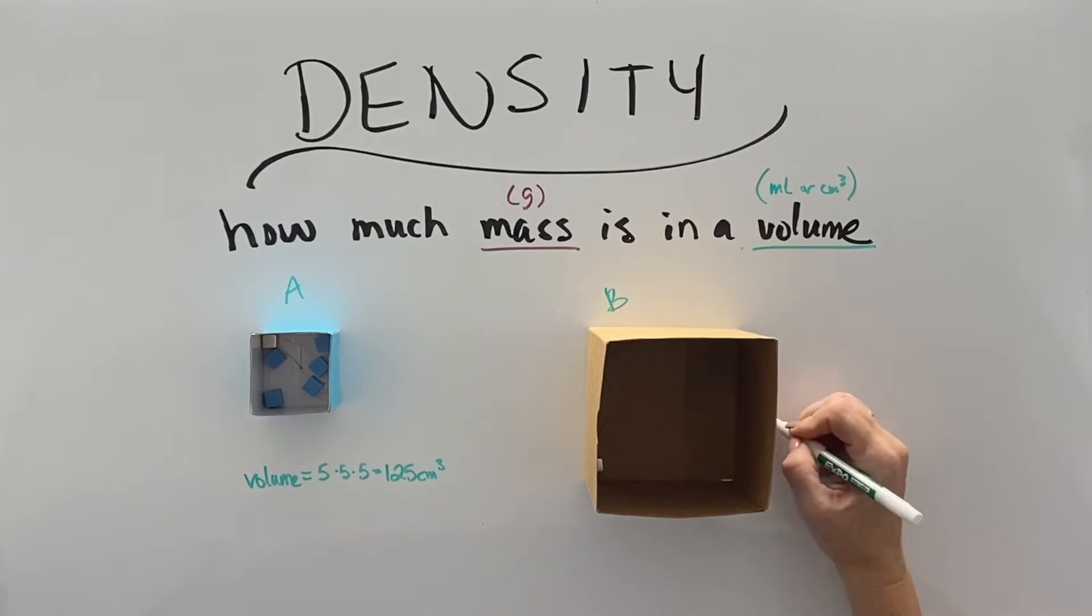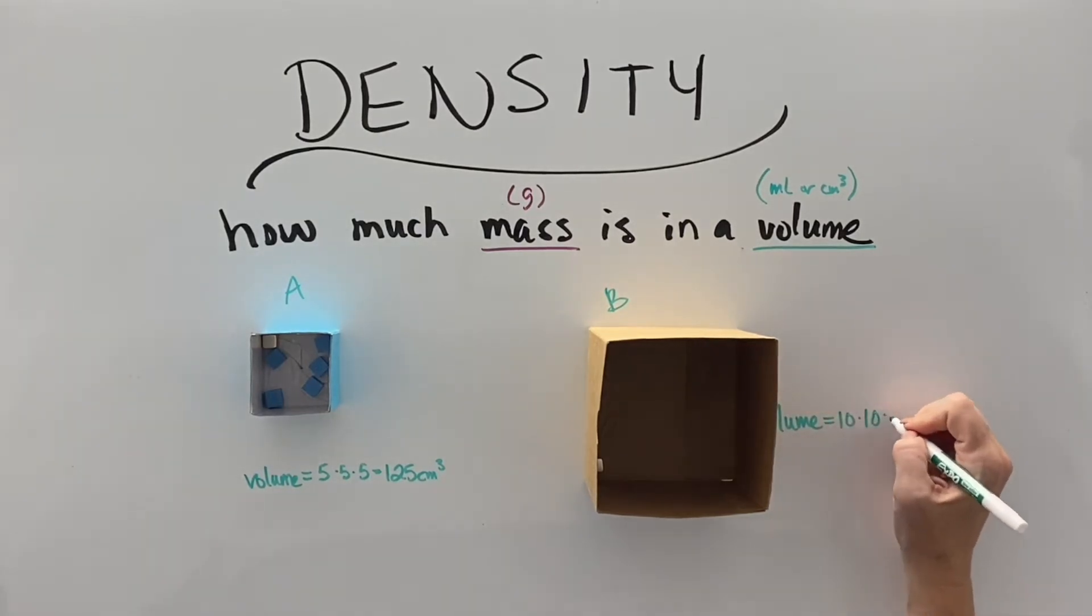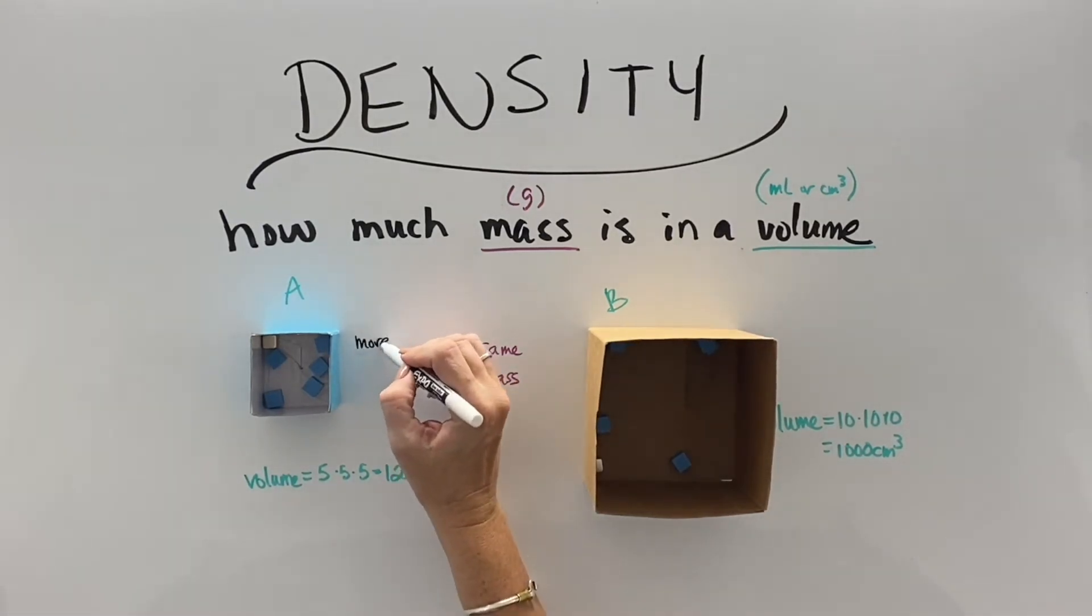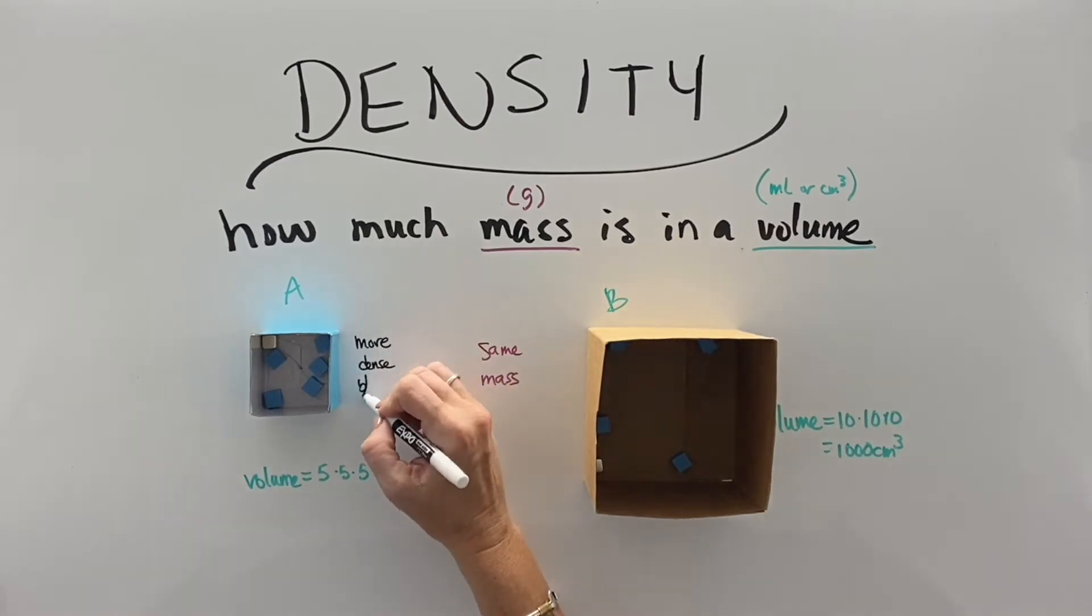This box is a much larger box with a volume of 10 times 10 times 10, or a thousand cubic centimeters. That's a lot of those little centimeters. So I started with five grams in this other box, and if I put five of these little grams over here, now they have the same mass, but box B has a whole lot more volume, and box A is more dense because it has less volume or less space.